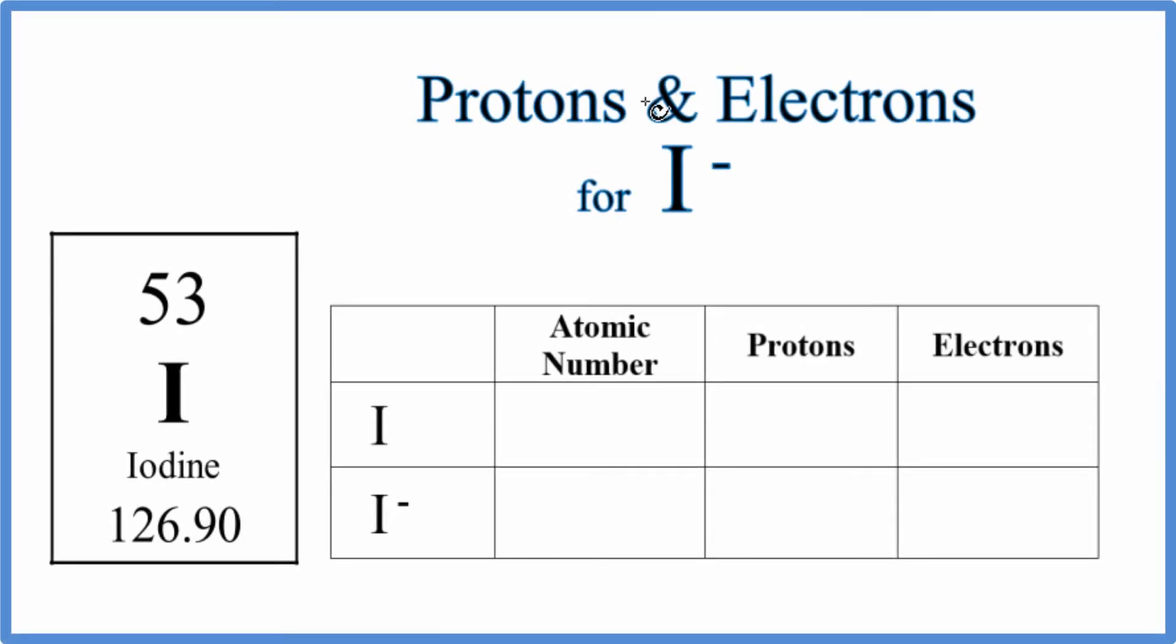In this video we'll find the number of protons and electrons for I minus. This is the iodide ion, it's the negative ion of iodine. The first thing we need to do is look at the periodic table.